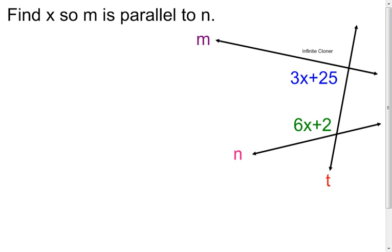Here we have an example where we're trying to prove two lines will be parallel — or make them parallel, which is another way I like to think of it. It tells us to find x so that line m is parallel to line n. They don't even look parallel right now, but I think of it as: right now they're not parallel, but I want them to become parallel.